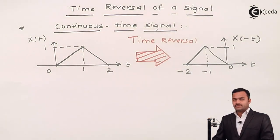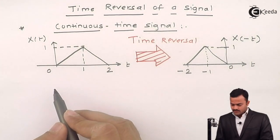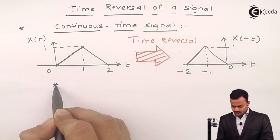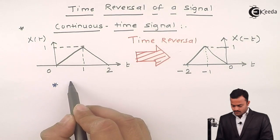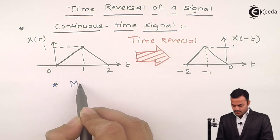So, what are the conclusions we can draw from here? In a time reversal operation, we get mirror image of original signal.